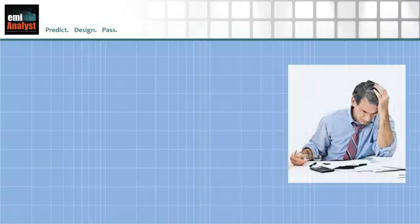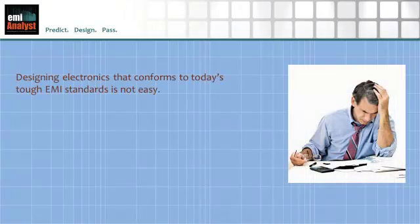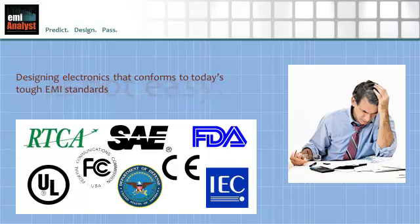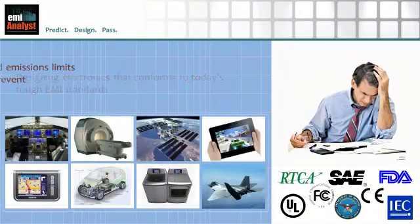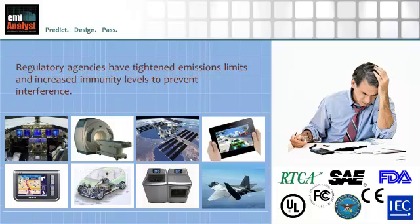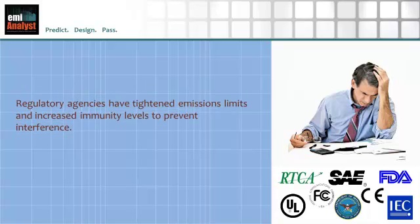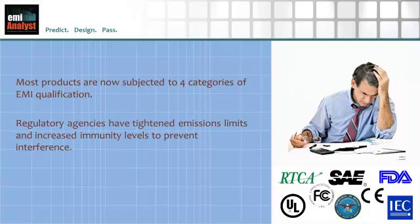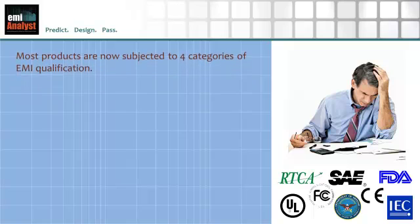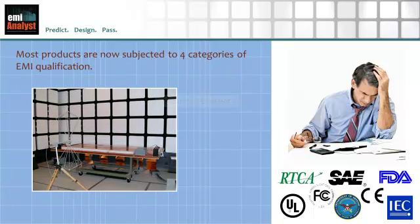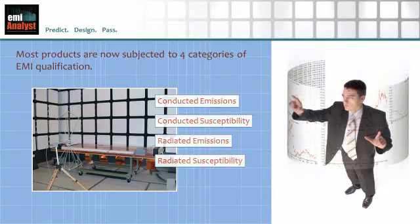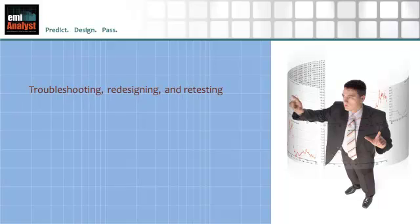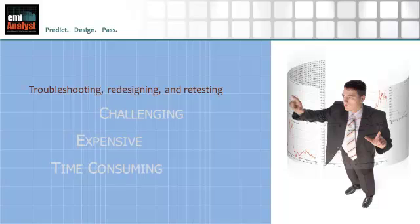Designing electronic systems and equipment that conforms to today's tough EMI standards is not easy. The proliferation of electronic devices has forced regulatory agencies to tighten emissions limits and increase immunity levels to prevent interference. Most products are now subjected to four different categories of EMI qualification, with multiple tests in each category. Troubleshooting any failures that occur and then redesigning and retesting is challenging and expensive, and delays product delivery or market entry.